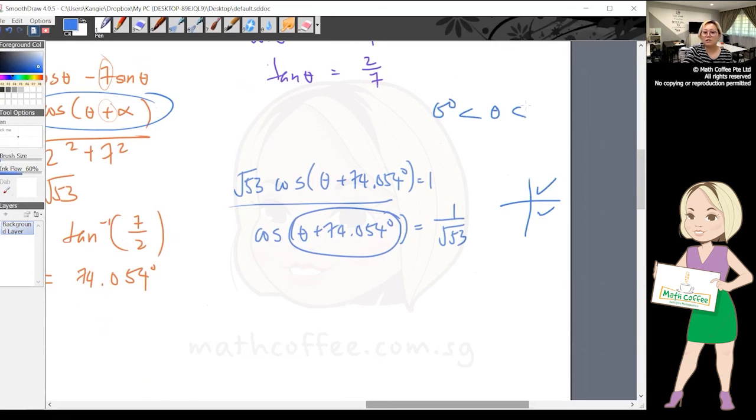Remember you need to find the answer range and the working range. So I have θ is 0° to 360°, you have to go and find θ + 74... go and find the working range, then you do as normal, agree?